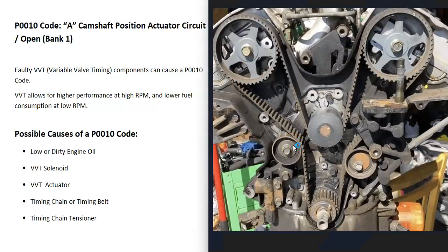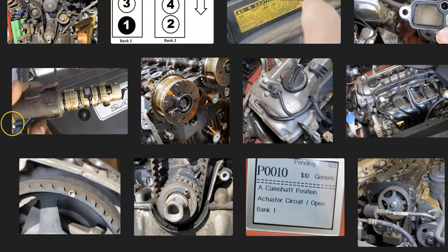You should check the timing belt, chain, and tensioner to be sure everything is held in place correctly. If everything looks good but the engine has really high miles and the belt or timing chain has never been replaced, it's possible it has stretched out and become loose, throwing off the timing. That's basically a general overview of how you go about fixing a P0010 code.